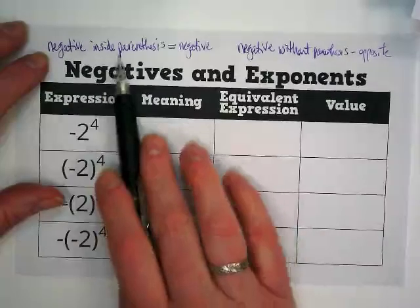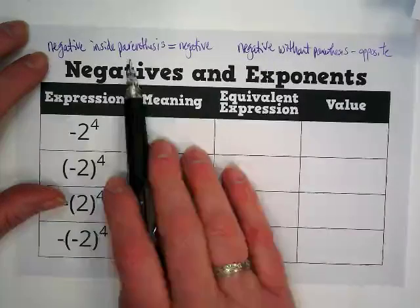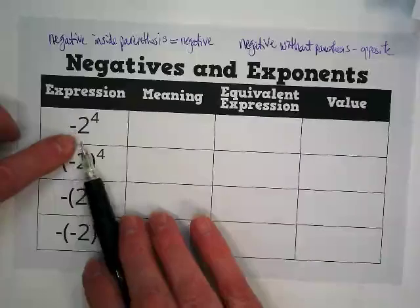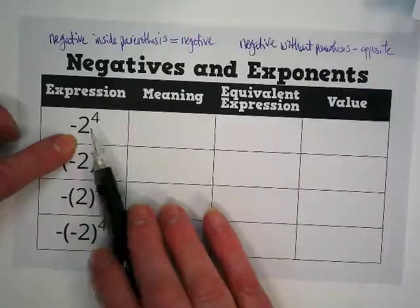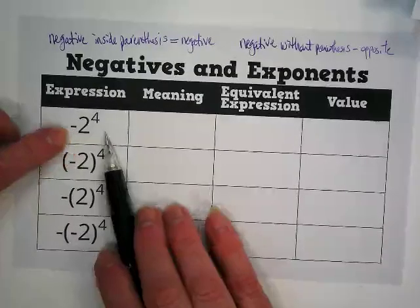Okay, so this is not saying that the answer is going to be negative when the negative is inside the parentheses. It's saying that this 2 outside of the parentheses is a 2 being multiplied 4 times, being raised to the 4th power.